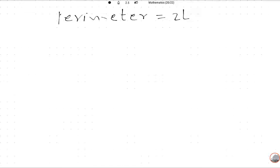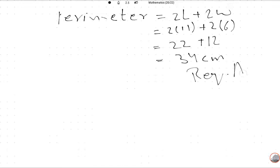2 times 11 plus 2 times 6 equals 22 plus 12, which equals 34 cm. This is the required answer.